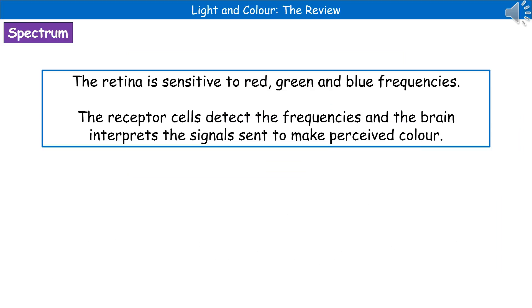What we actually have inside our eye are a special type of cell called our cone cells. And these are actually sensitive to the different frequencies of our light. So what we've got are cells that are sensitive to the red, the green, and the blue frequencies.